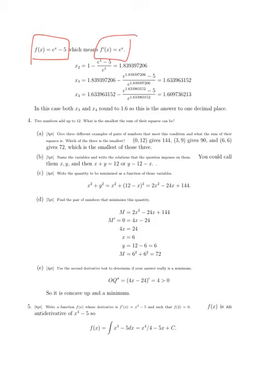Its derivative is e^x, so we plug into Newton's formula: x₁, which is 1, minus f(x₁) divided by f'(x₁), and that works out to 1.839397. We plug that into the same formula and get 1.633. The first decimal place changed, but if we plug that in again, the first decimal place does not change. We go from 1.63 to 1.61. So 1.6 is the natural log of 5 to one decimal place.